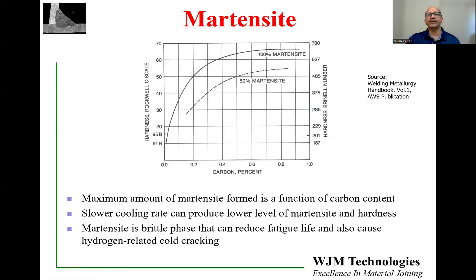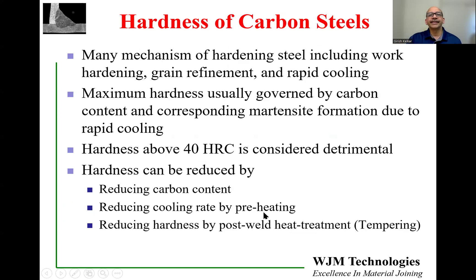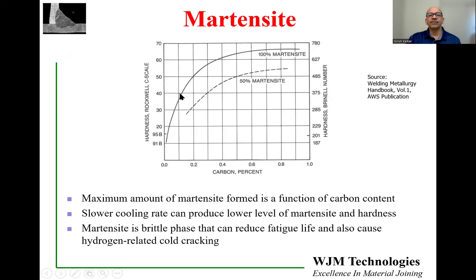Some strengthening by martensite formation is acceptable, but too much martensite may require corrective action. There are many hardening mechanisms in steel — work hardening, grain refinement, rapid cooling — but maximum hardness is governed by martensite formation from rapid cooling. A hardness above 40 HRC is generally considered detrimental. Looking at the chart, 40 HRC corresponds to a carbon content of just above 0.1%, so any steel with more than about 0.12% carbon cooled fast enough will exceed 40 HRC.